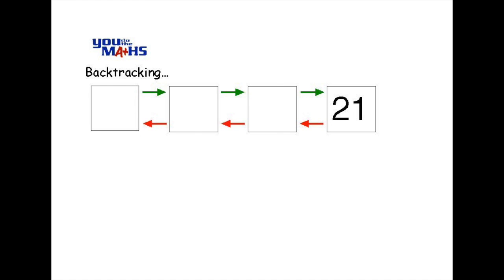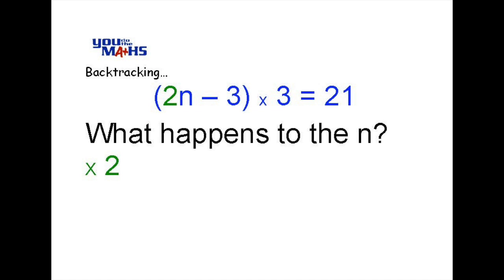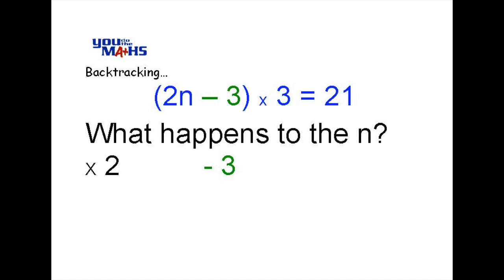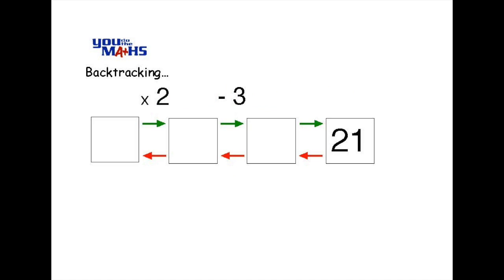Once again we ask what happens to the n and the first thing that happened was to multiply by 2. So we put that above the first arrow after the first box. The next thing that happens is we take away 3. So again we go back to our boxes and put that above the second arrow, moving left to right.